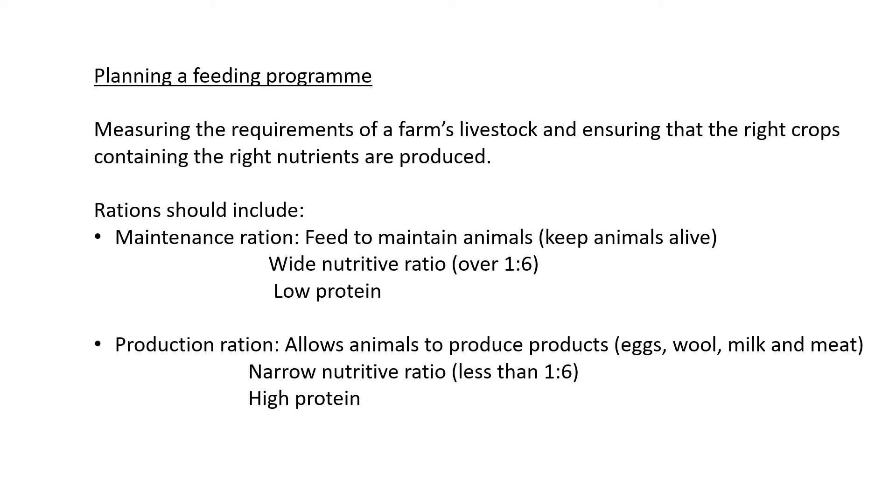What they mean here is usually on a farm, the farmer should know whether he has cattle, how many he has—let's say 200 cattle, 400 pigs, and 200 sheep. You should know the type of animals and also know their requirements.